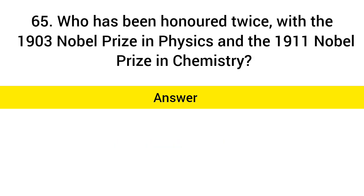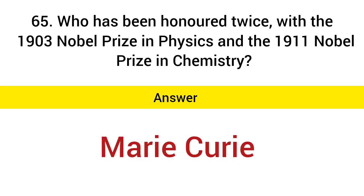Who has been honored twice — with the 1903 Nobel Prize in Physics and the 1911 Nobel Prize in Chemistry? Answer: Marie Curie.